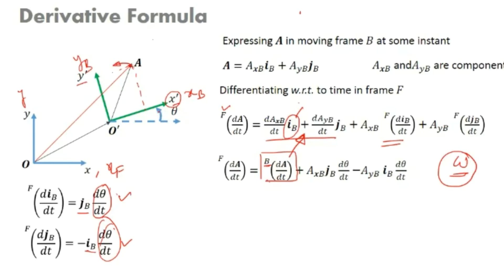The sign of omega is determined by the sense of rotation, and we use the right-hand rule to identify the direction of omega along the appropriate axis.